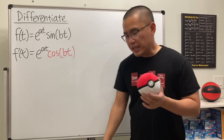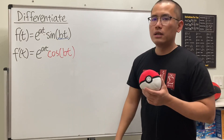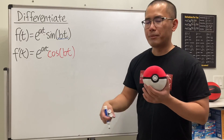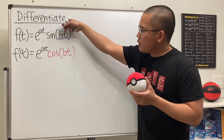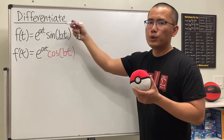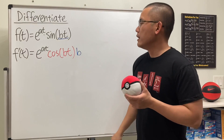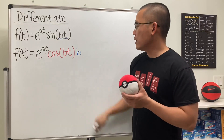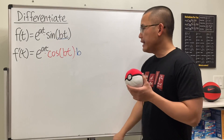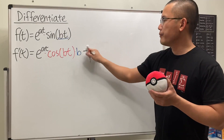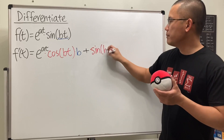But we're not done yet, because if you look at the inside, bt — b is just a constant, just like number five, six, or eight. When we differentiate bt we get b, so we will have to use the chain rule and multiply by b right here. This is the first part of the product rule. Then we are going to add the second function, which is sine of bt.